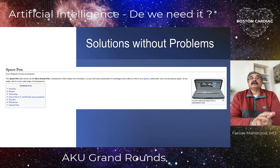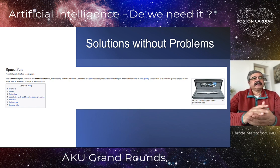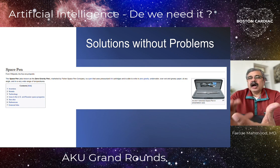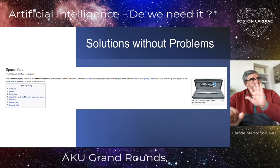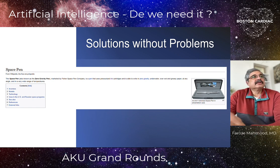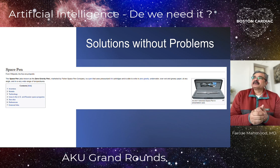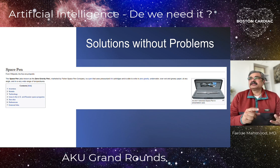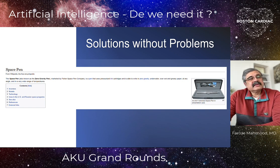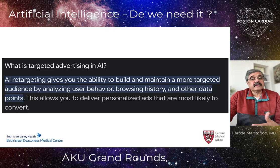Going back to the theme of solutions without problems — consider the space pen. When NASA started visiting space more frequently, they wanted a pen that could operate in zero gravity, sustain many G-forces, and still write impeccably on any surface. They put about 300 million dollars into developing a space pen, which was unveiled to the media as being able to do so many things. But then they realized a pencil could do exactly the same thing — creating a solution for which a problem did not exist.